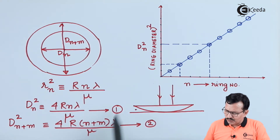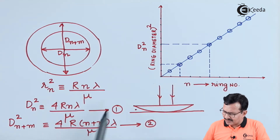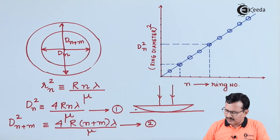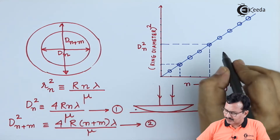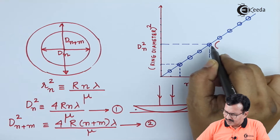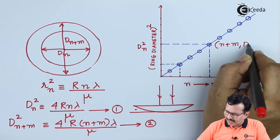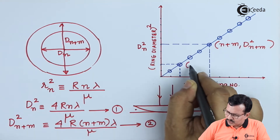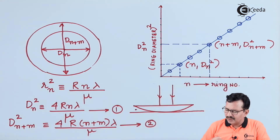For a short while, let us assume that I am plotting these values on a graph, where the x-axis represents the ring numbers and the y-axis represents the corresponding squares of the diameters. The plot turns out to be linear. To find the slope of this line, the two points are: ring number (n+m) with diameter squared d(n+m)², and ring number n with diameter squared dn².